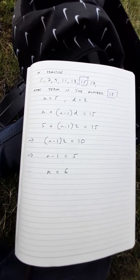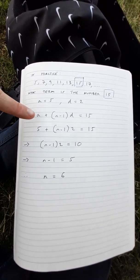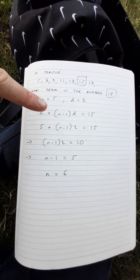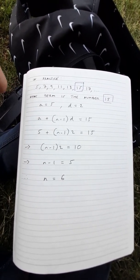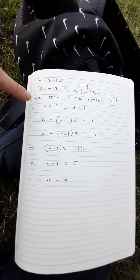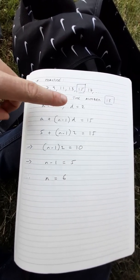Now is there another way to use the expression a plus n minus 1 times d? Well we can have the same sequence and what we can do is find out which term is the number 15.